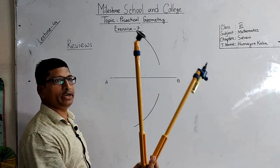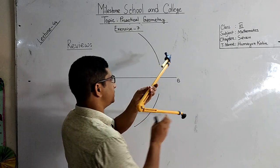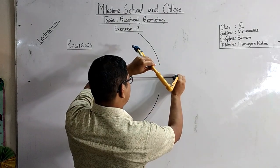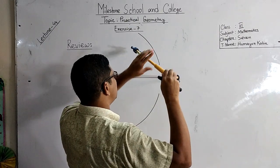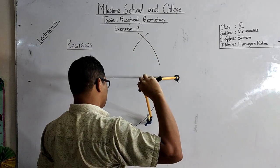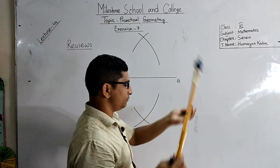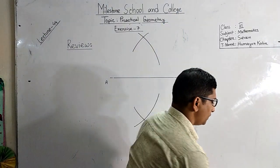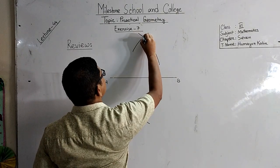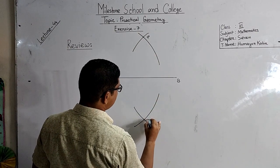After that, taking the same radius, with B as a center, draw another two arcs like this way. Suppose these two arcs intersect at point P, and these two arcs intersect at point Q.